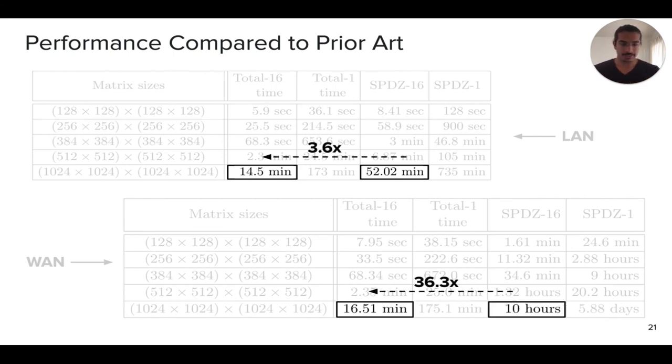So the first one is a fairly straightforward result. What is the performance compared to prior art? We can see that in the LAN setting, we are about 3.6 times faster. In the WAN setting where the communication improvements, which is really what this work is about, really start playing a bigger role, that's where we are about 36 times faster than prior work. The other cool bit about this is that the fact that these are asymptotic results. So as we go to larger matrix sizes, these are common, for instance, in ResNet, a thousand by thousand is a reasonable size matrix. As we go to larger size, the overhead or the improvement actually gets better because it's an asymptotic improvement.